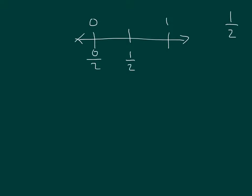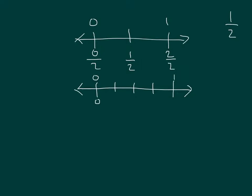We could have labeled this 0 halves and this over here as 2 halves. If we continued to look at this number line, we would notice that if we had divided 0 and 1 into four parts, that's one part. As you can see here, this is 1, 2, 3, and 4. This would be 0 fourths, 1 fourth, 2 fourths, 3 fourths, and 4 fourths. So 1 half is also equal to 2 fourths.